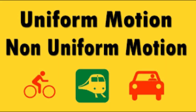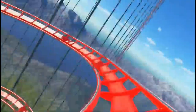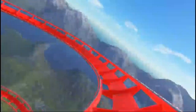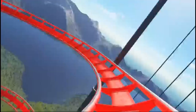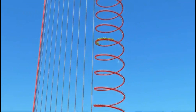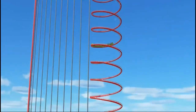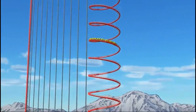And then we have non-uniform motion. This is when the speed or direction of the motion changes. Have you ever been on a roller coaster? It speeds up, slows down, and changes direction — that's non-uniform motion.